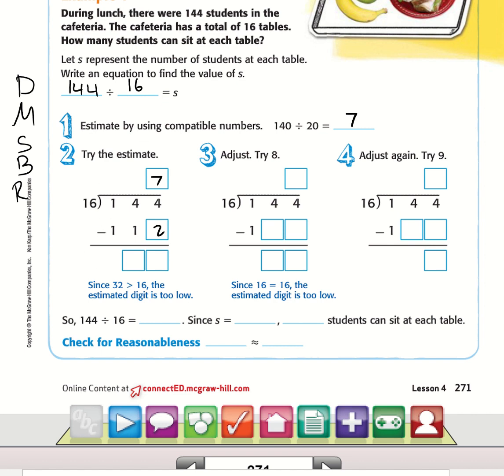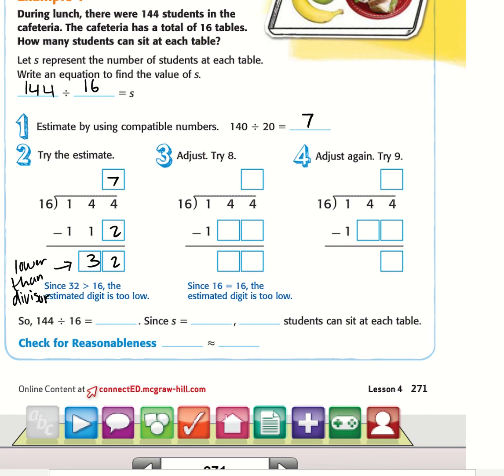If you look here, that's 2, that's 30. So 32 is greater than 16. Since 32 is greater than 16, that means this number is too low, because this number should always be lower than the divisor. After we subtract, this number always has to be lower than the divisor. So we're going to adjust the quotient.